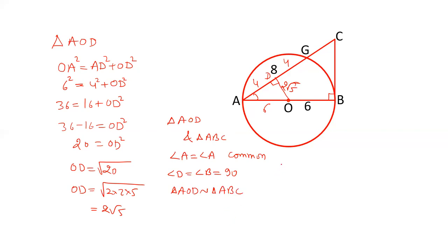Now the two triangles are similar, so the corresponding sides are proportional. OA is the hypotenuse, and AC is the hypotenuse. OD is opposite angle A, and BC is also opposite angle A, so we'll take OD and BC. The third side is AD and AB. We are taking the ratio of corresponding sides of similar triangles. OA is given as 6.